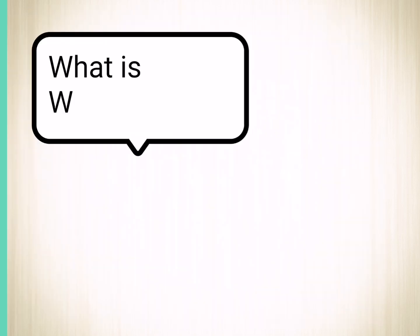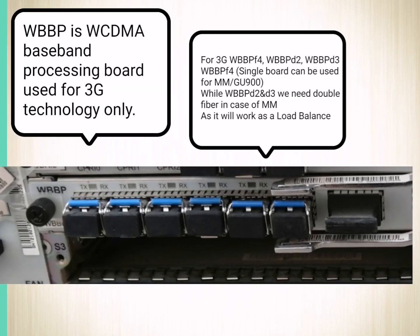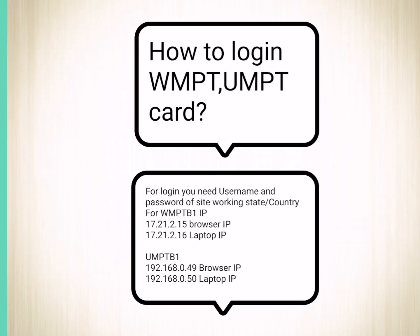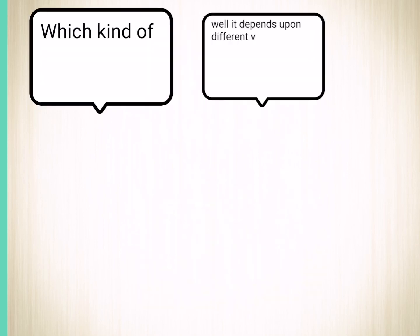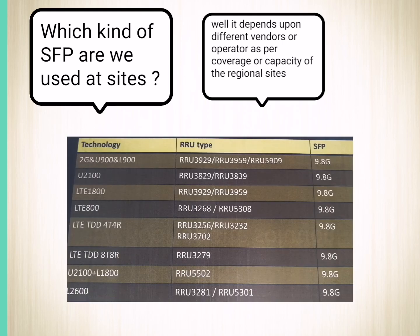The WCDMA baseband processing board is used for 3G technology only. Regarding how to log in to the WMPT and UMPT cards for different regions, the browser IP address and laptop IP address differ depending on the operator and region.